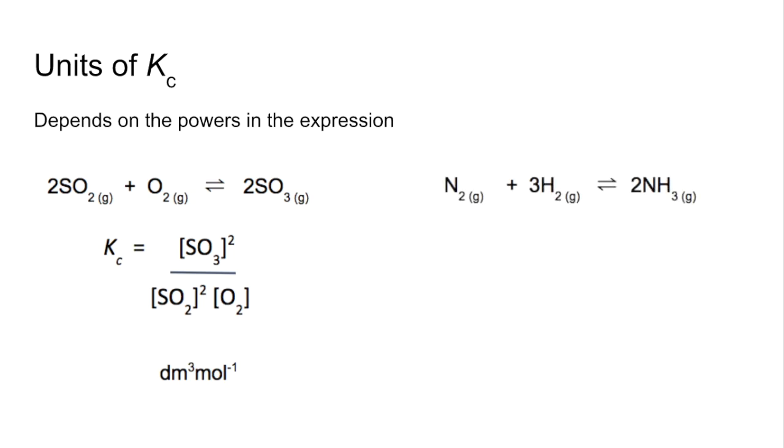Another one. So there's the equilibrium for the Haber process. So there's the Kc expression. So the units would effectively be moles per decimetre cubed squared on the top to the power of 4 on the bottom. So that cancels down to 1 over moles per decimetre cubed squared, and bringing everything to the top, decimetres to the power of 6, moles to the minus 2. And just before I move off this slide, I haven't got this one, but just to talk through, if you've got the same powers, top and bottom, then Kc would actually have no units.